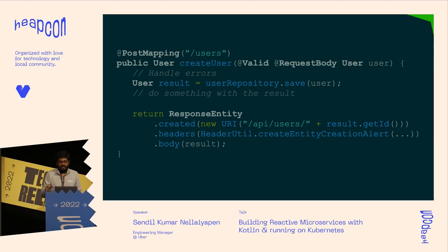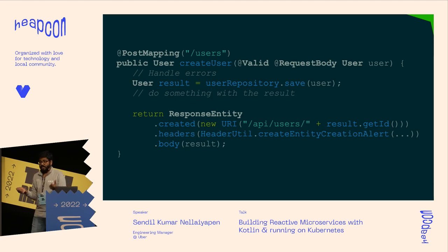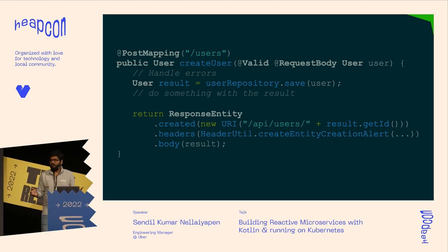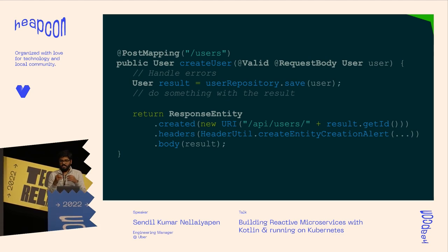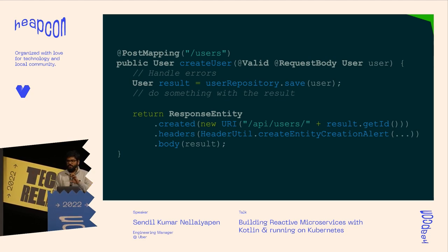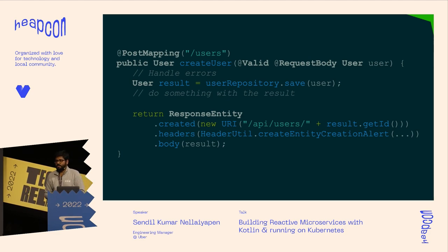The annotations @Valid and @RequestBody simplify everything — you can have validation rules and define how the object structure should look. You take that user, do some pre-processing and error handling, save it to your repository, get a result back, and wrap it in a ResponseEntity. That's what Spring Boot does — it makes it magical and eliminates a lot of boilerplate you'd otherwise rewrite every time.